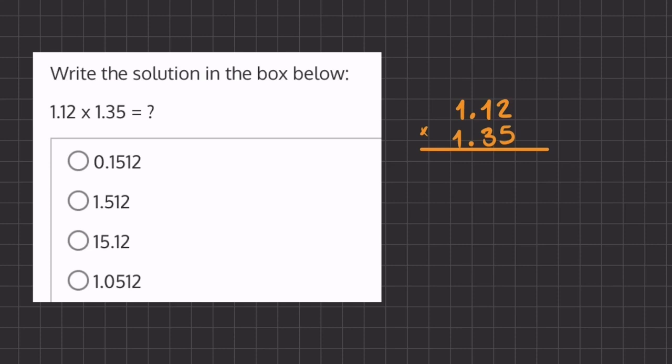In this problem we are multiplying two decimals by one another. We're going to use long multiplication, and when we multiply decimals we're going to ignore them currently and get back to them at the end of our problem.